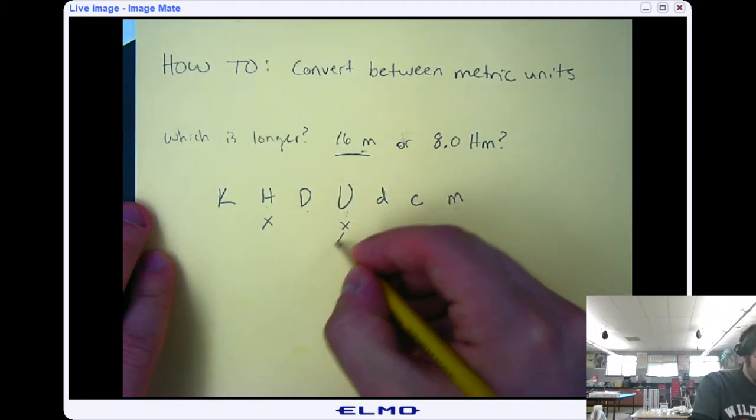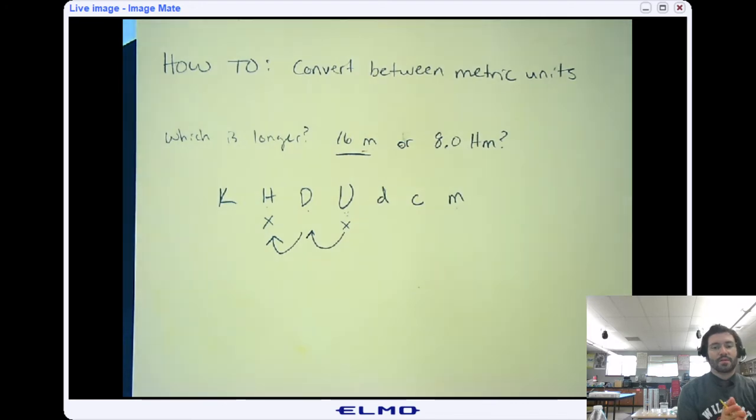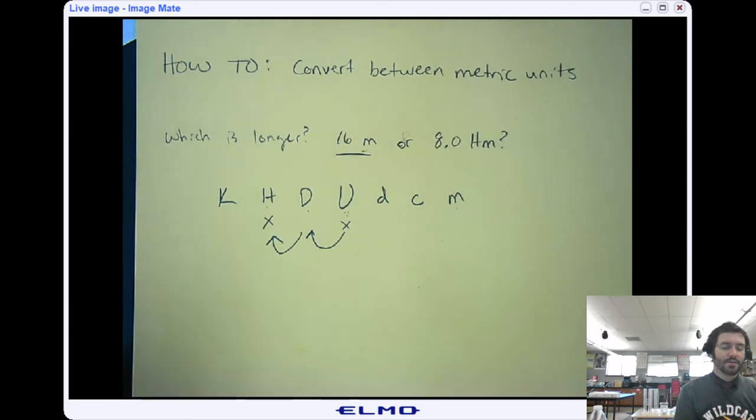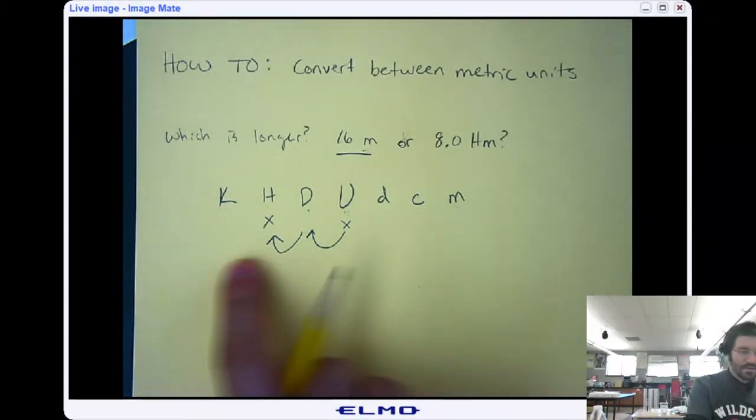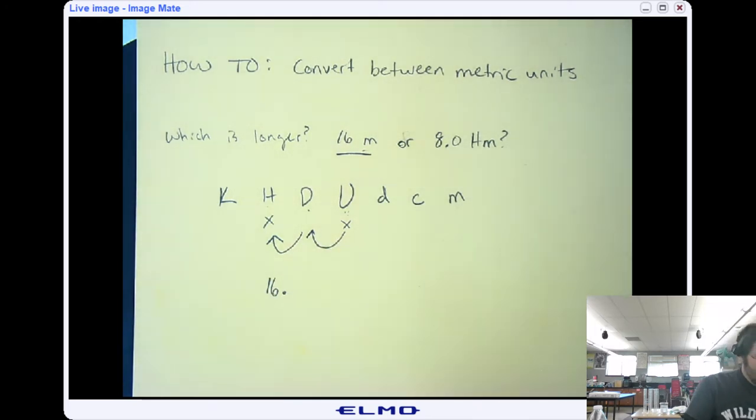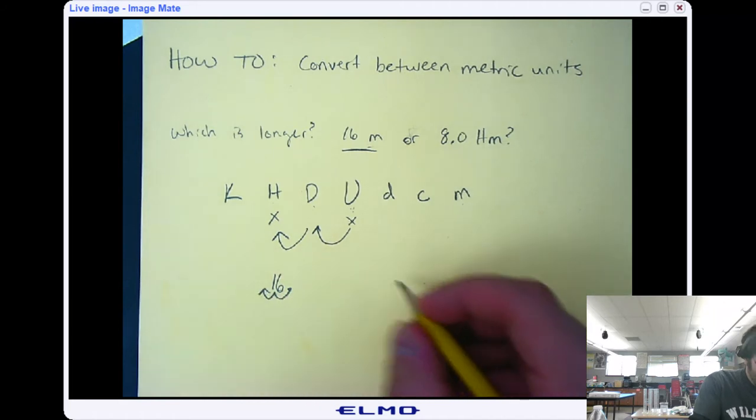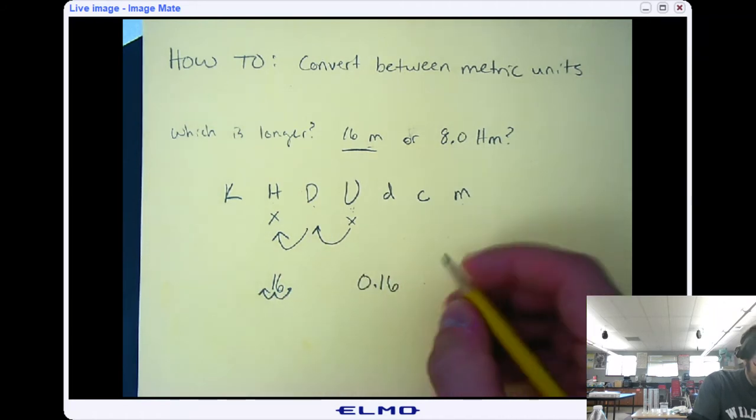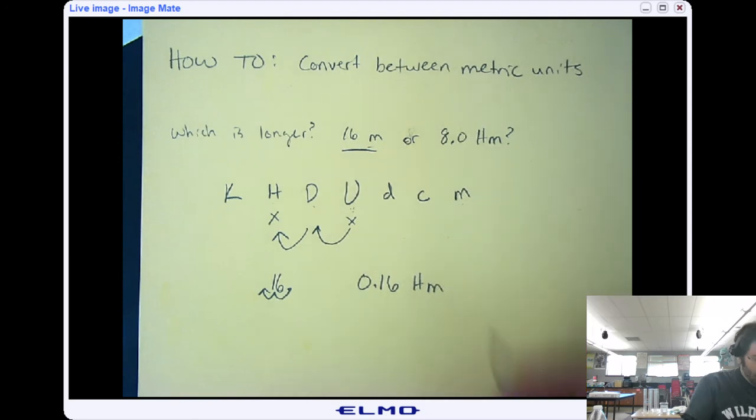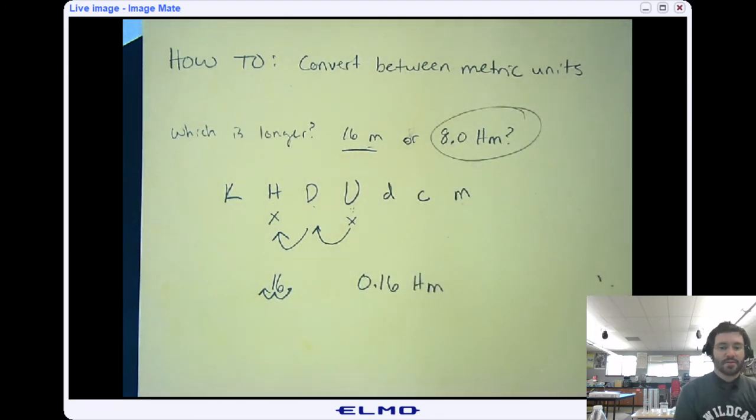And that means we need to move two jumps to the left. So what that really means is that hectometers are 100 times bigger than meters, so we need to divide by 100. But we're just going to move the decimal point the same way we moved through this chart. So for 16, the decimal point is right there. We're going to move the decimal point twice to the left, one, two, and we get 0.16 hectometers, which means that the 8 hectometers is in fact larger because 8 is bigger than 0.16.